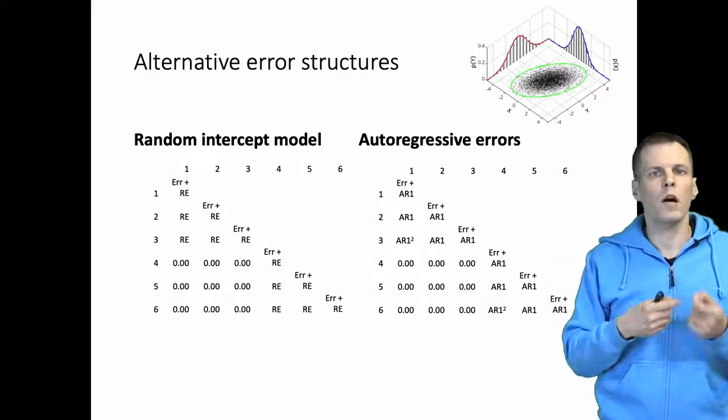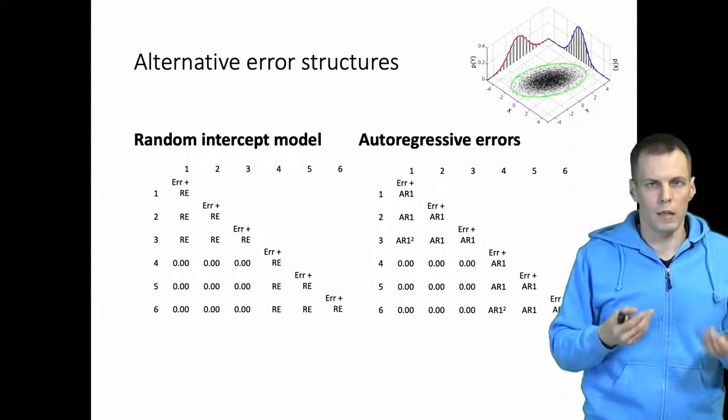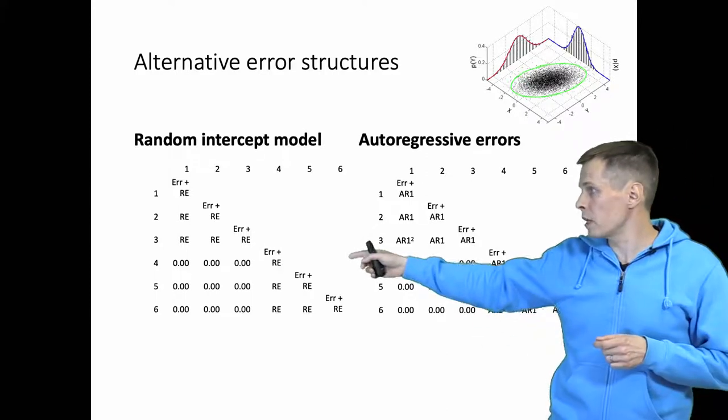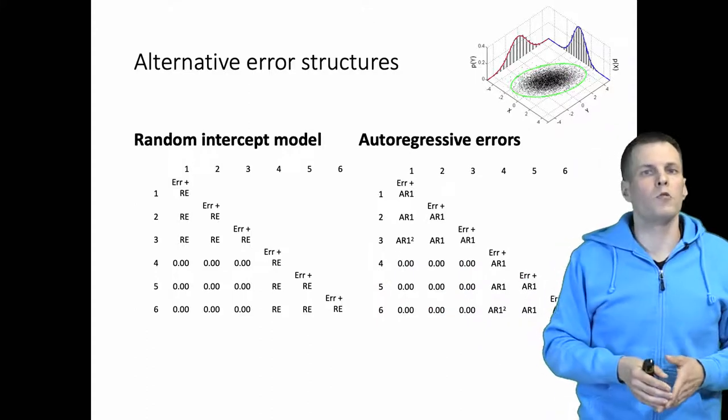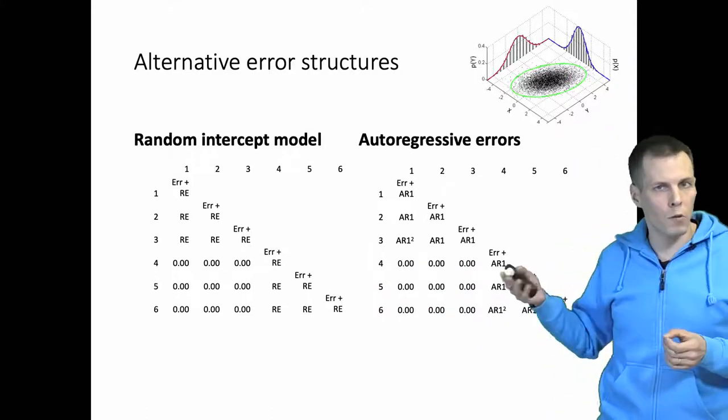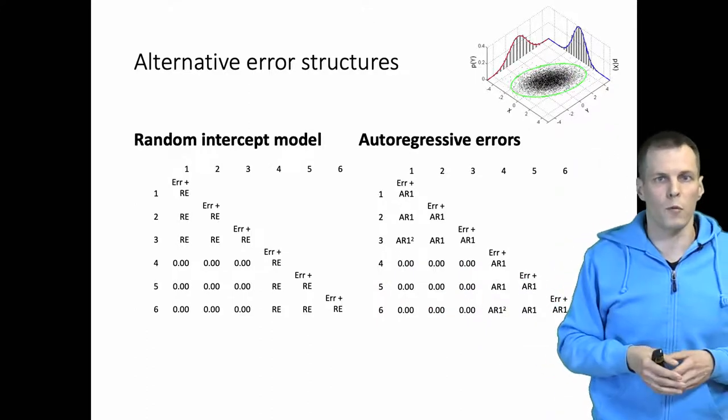We can do all kinds of combinations with these. Typically you always have the random intercept (the RE here), but you can have the random intercept and the autoregression as well, as long as you have enough observations.